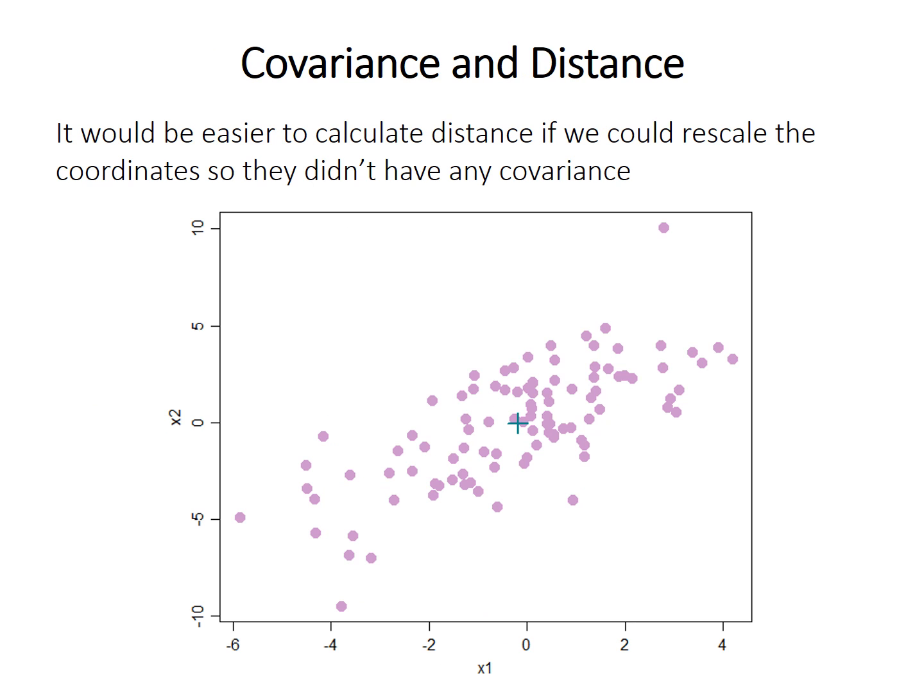Getting back to the problem with Euclidean distance, it would be more robust if we could rescale this plot so that the two variables didn't have any covariance anymore. That's basically what the Mahalanobis distance does. But first, before we can talk about how it does that, we need to discuss how we can rescale variables.